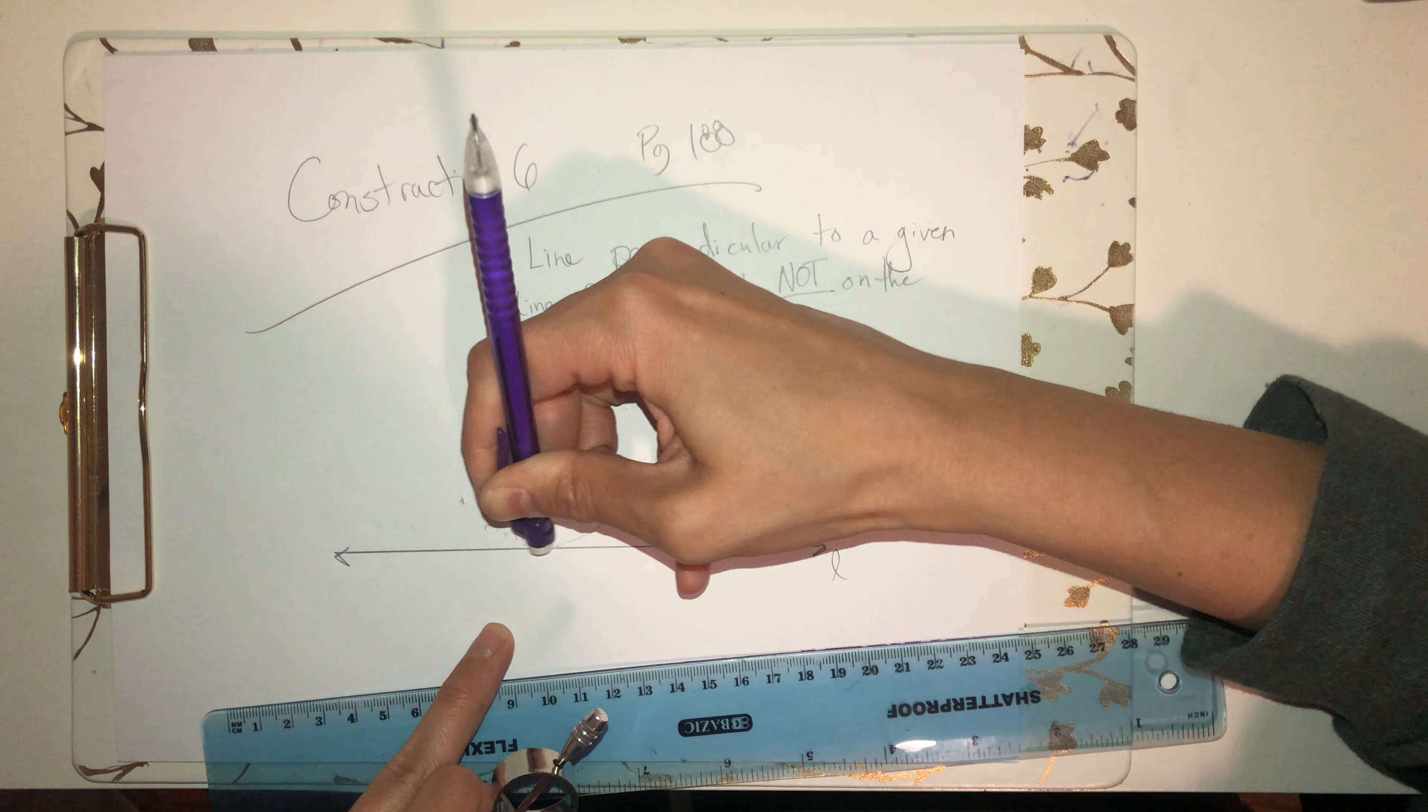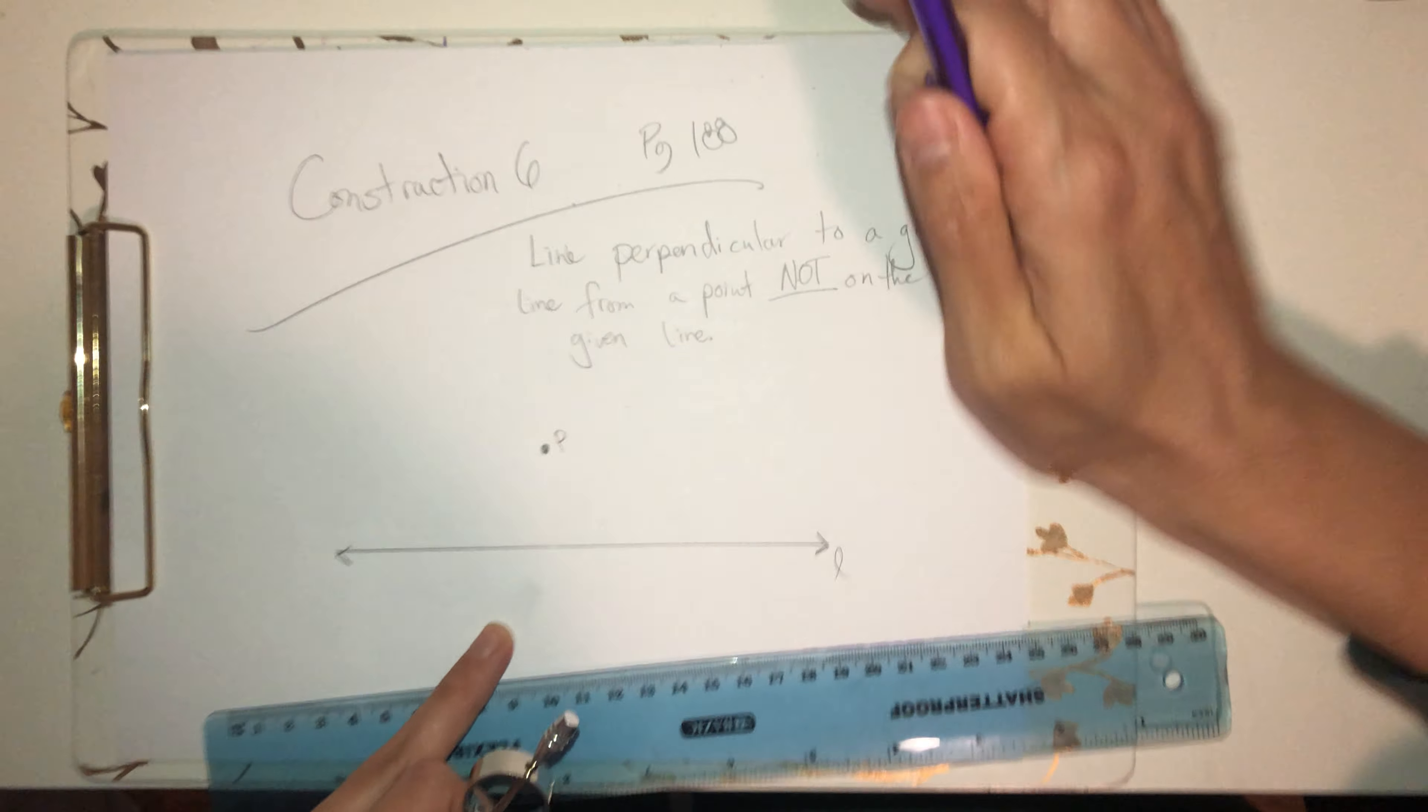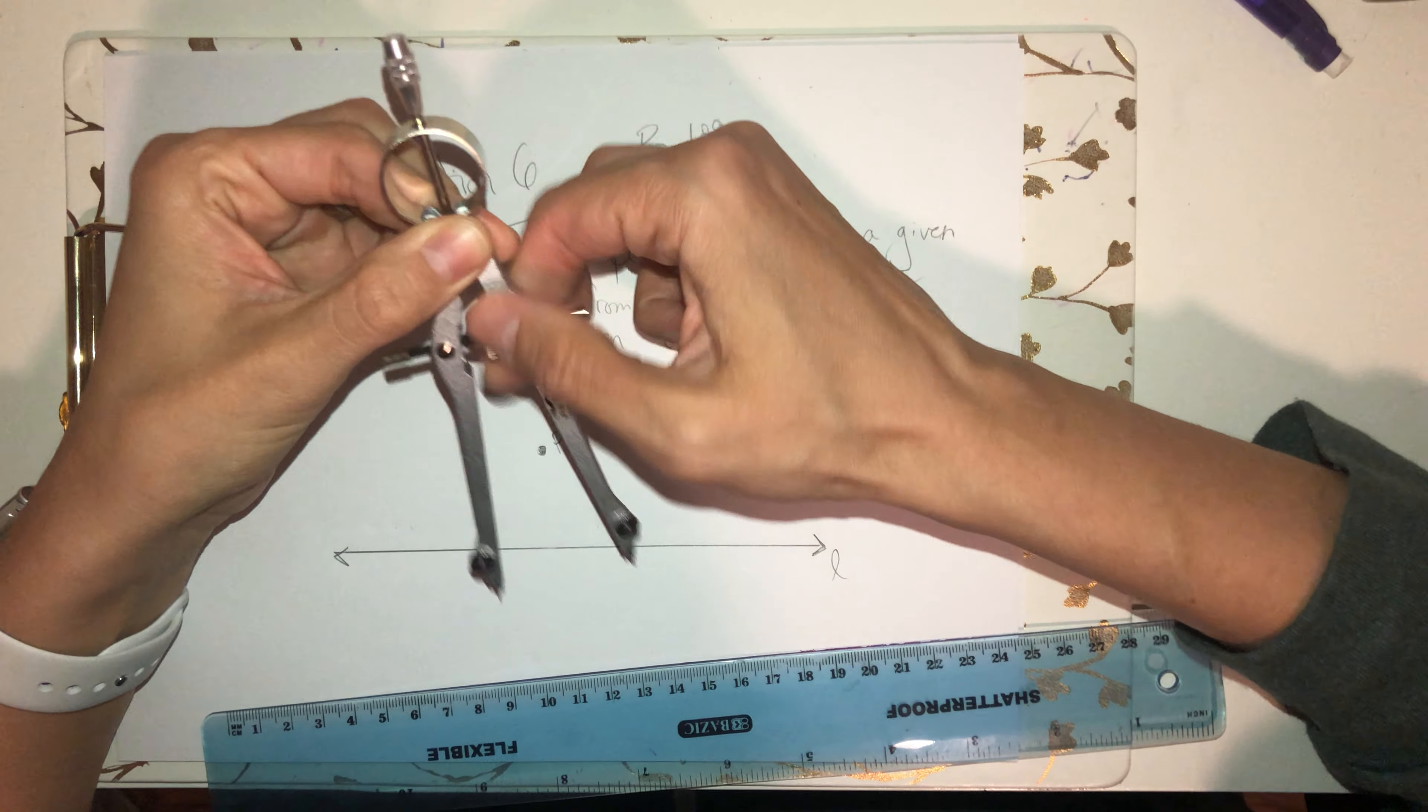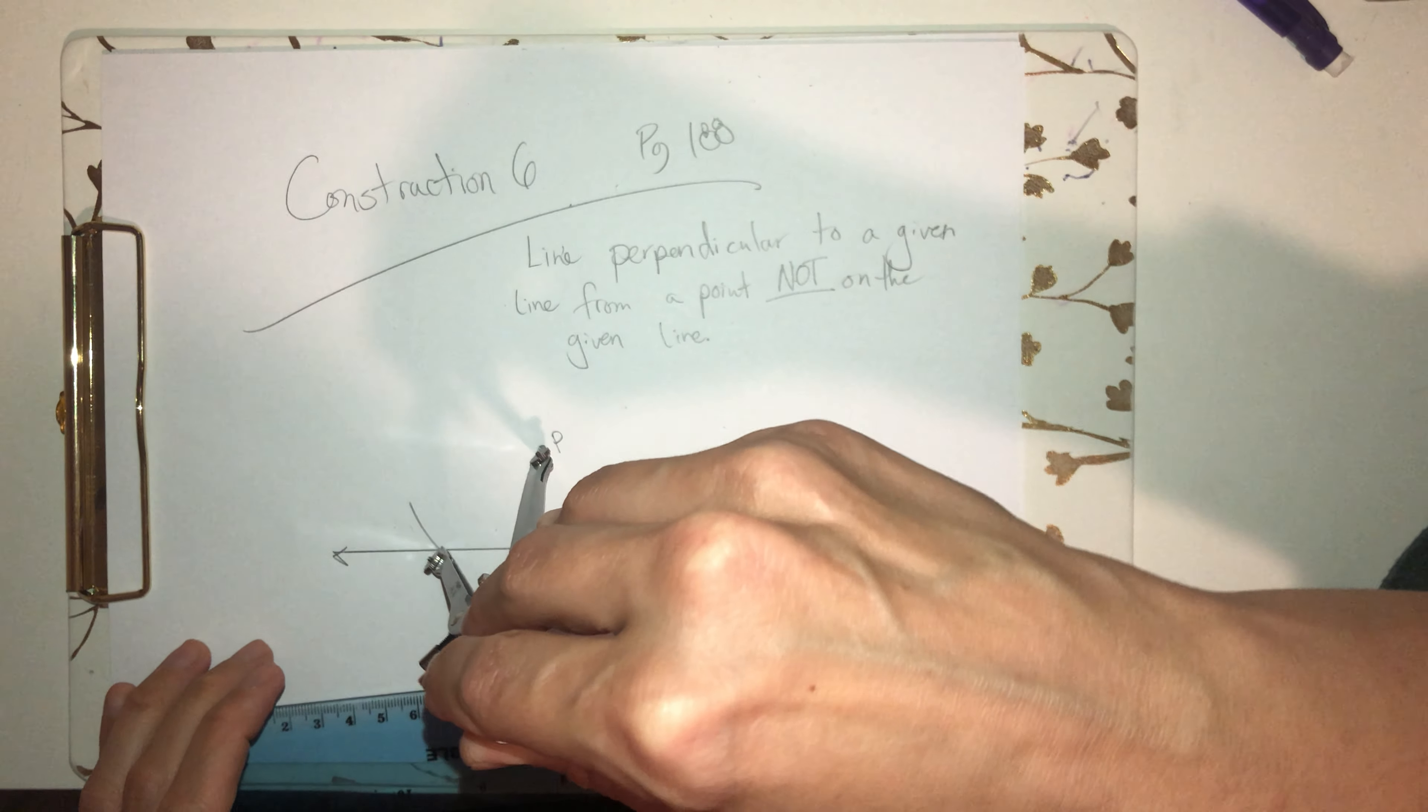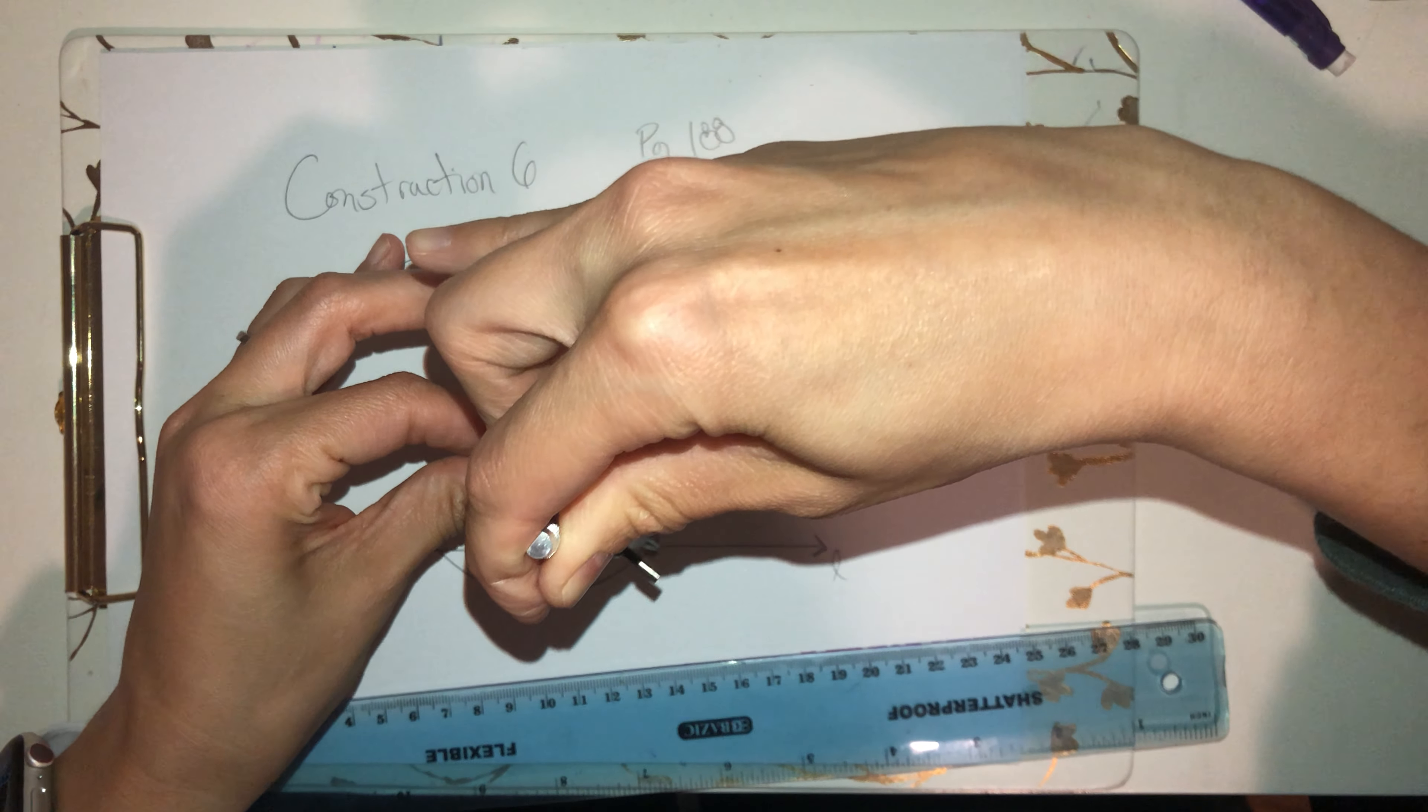Let me go ahead and just erase that arc right there because that was not going to cut it. So definitely open up your compass to a width that's going to get the job done. And what is the job? Centered at P, start above line L, draw your arc crossing line L below, crossing line L again on the other side.